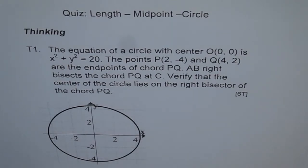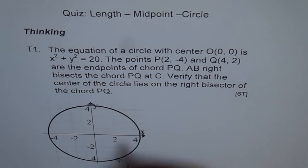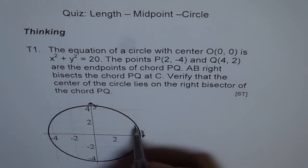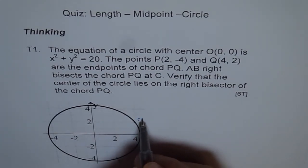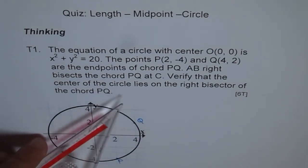We already have the circle drawn here, and now let's put the points and visualize the whole thing. The point P is (2, -4) — that means 2, -4 is this point, and we'll call this point P. Point Q is (4, 2) — x is 4 and the y value is 2. These are the endpoints of PQ, so let's join PQ.